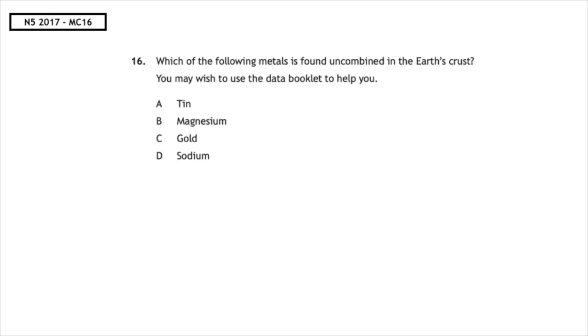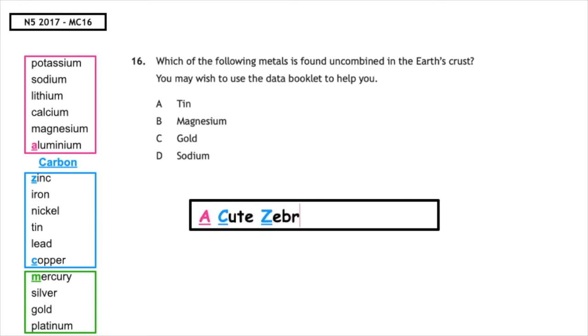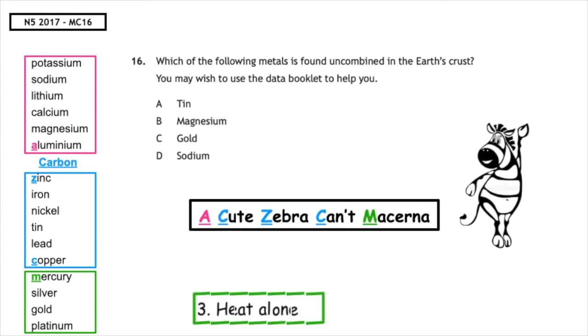This past paper question is from the National 5 2017 multiple choice 16. Which of the following metals is found uncombined in the Earth's crust? You may wish to use the data booklet to help you. Remember, A Cute Zebra Can't Macarena. We're looking for mercury and below. And that means that the correct answer to this question is multiple choice answer C, gold.